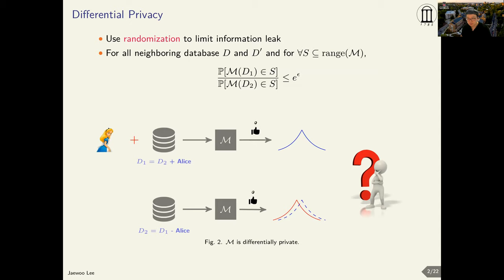Differential privacy enforces that the output distribution of the algorithm M over two neighboring datasets D1 and D2 are indistinguishable to the adversary. Given the output of the algorithm, the adversary cannot distinguish D1 from D2, and hence the presence or absence of Alice is hidden to the adversary.